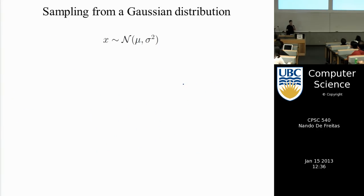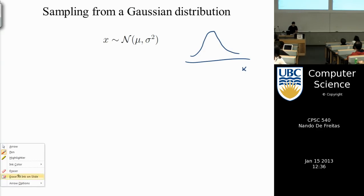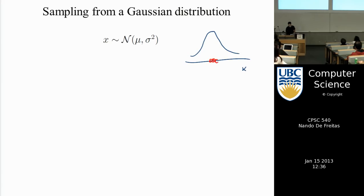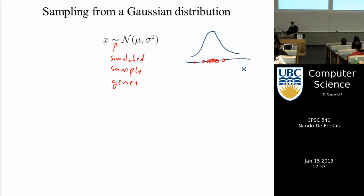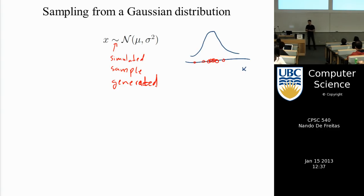If we have a Gaussian distribution, we can draw samples by calling a random number generator. We'll get more samples in the middle and fewer in the tails. When I write x sampled from a Gaussian distribution with mean mu and variance sigma squared, I'm saying that x is a candidate drawn from that distribution — I've simulated it.